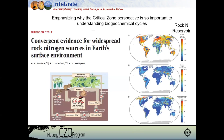To close, I want to highlight why the critical zone perspective is so important to understanding biogeochemical cycles. This paper — convergence evidence for widespread rock nitrogen sources in Earth's surface environment — just came out this year. Its take-home message is that rocks at the global scale represent a large reservoir of nitrogen. This is really important because traditional nitrogen cycle diagrams emphasize the atmosphere and internal controls. With the critical zone perspective, we can start thinking about bottom-up inputs of nitrogen to take a more holistic approach, ensuring we're not missing critical interactions across space and time. Thank you very much. I'll turn it over to Ashley now.